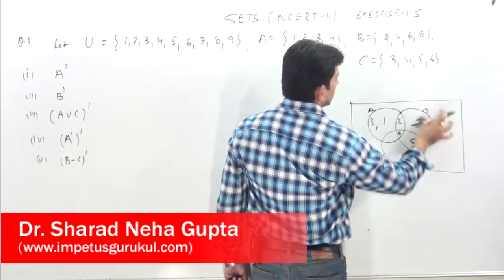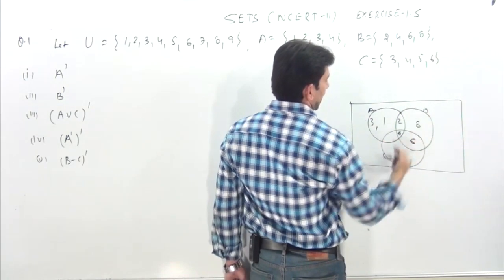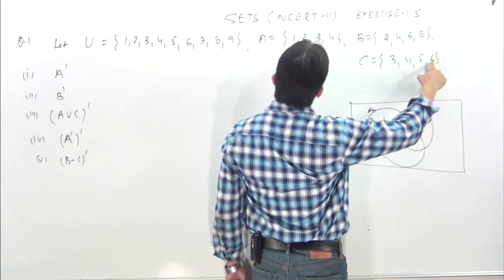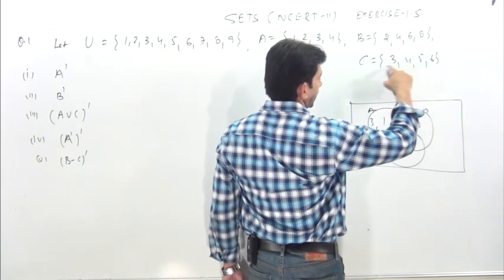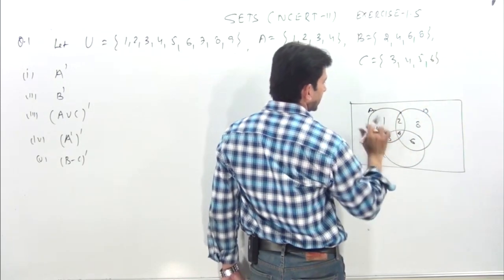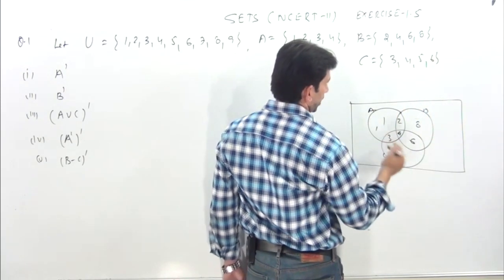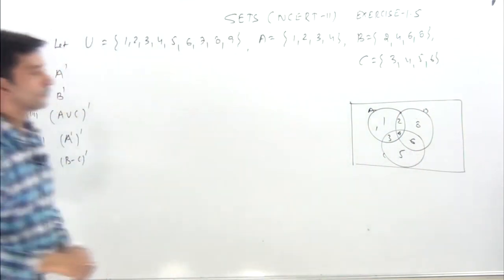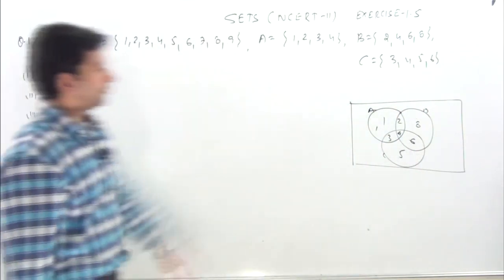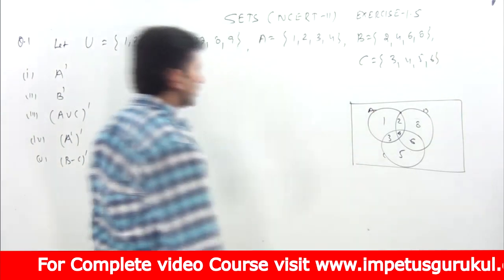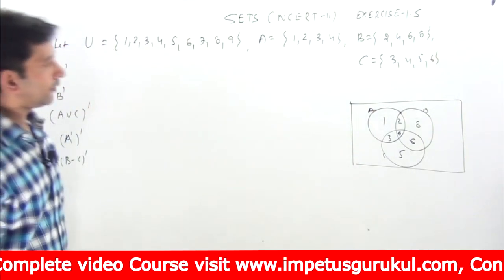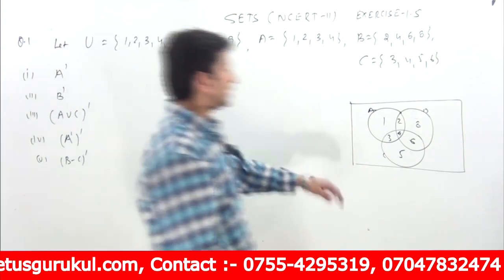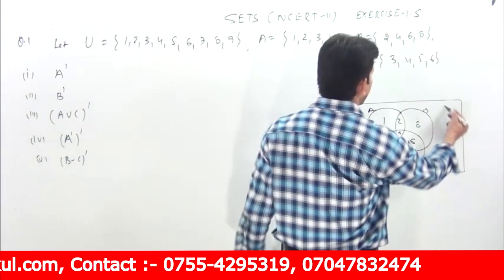1, 2, 3, 4 — phir milta hai 2, 4, 6. 6 yahan par bhi hai to 6 yahan likhiye. C mein kya hai: C mein common hai 4, 6, 3. 3 mujhe yahan likhna chahiye tha. Remaining reh gaya 5. Ab yeh A, B, C ho gaya. {1, 2, 3, 4, 5, 6} — 7 aur 9 kahi honge.